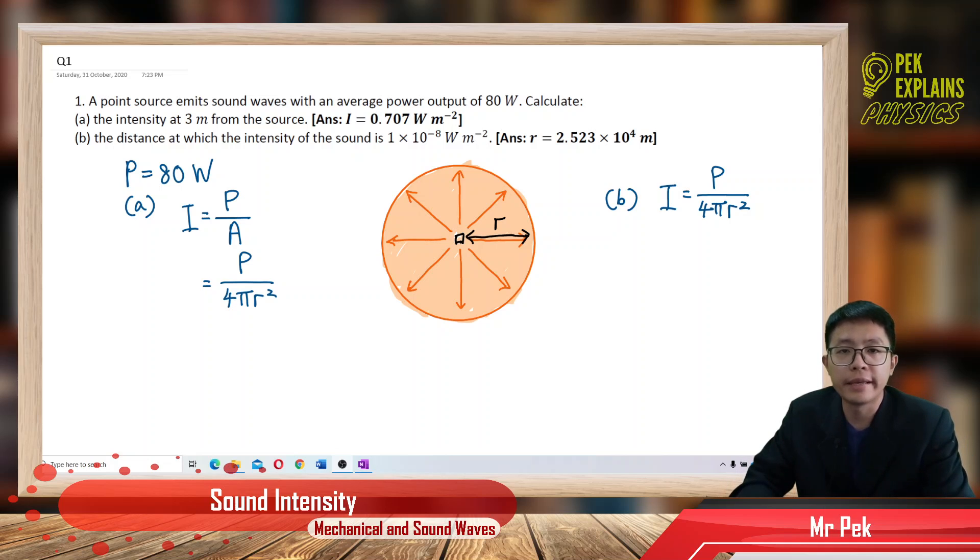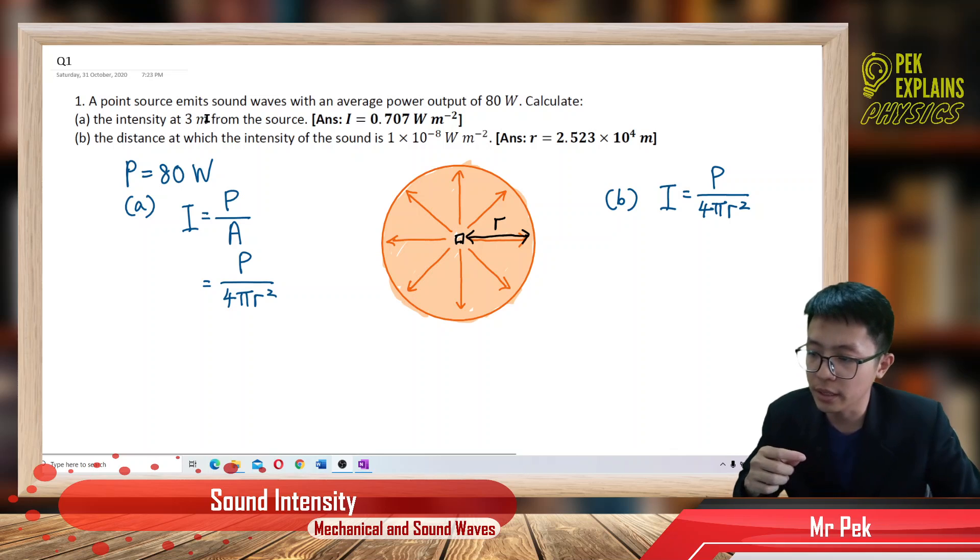Okay, sound intensity. This is the question. A point source emits sound waves with an average power output of 80 Watt. Calculate the intensity at 3 meter from the source.